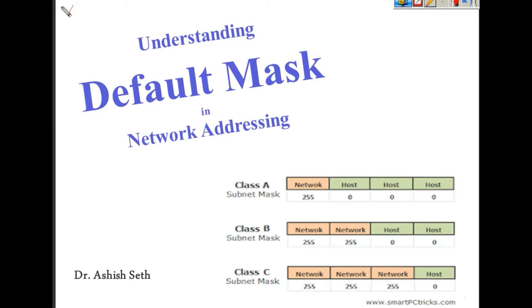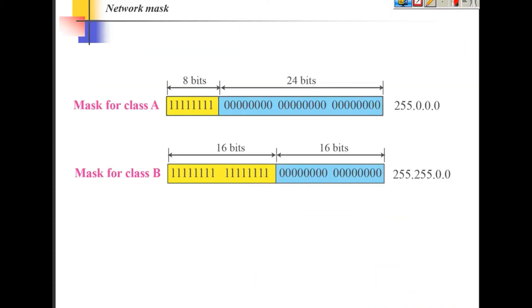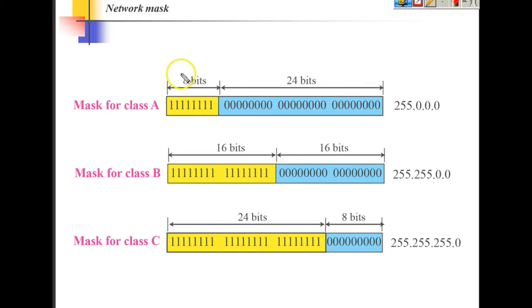In this video we will learn about default mask and understand why default mask is important and used in network addressing. As we have already seen, the entire address space is divided into class A, class B, and class C when we talk of classful addressing, and these 32 bits are divided into network ID and host ID.